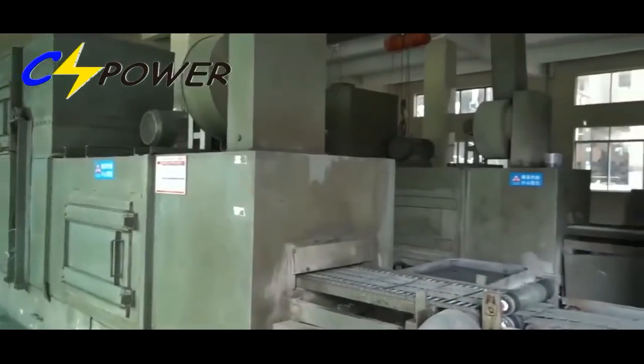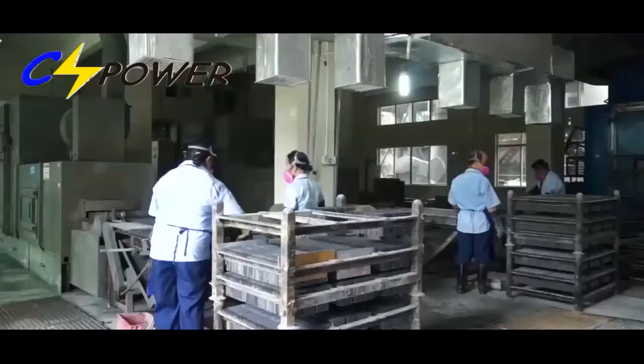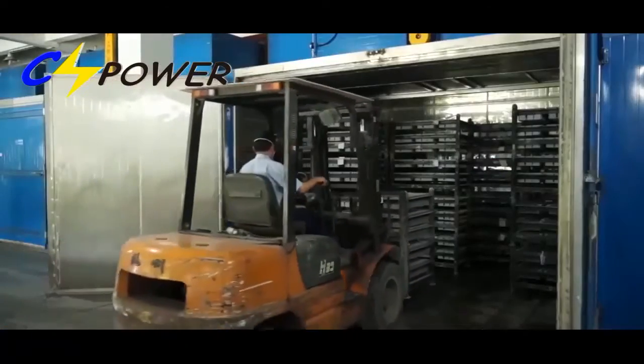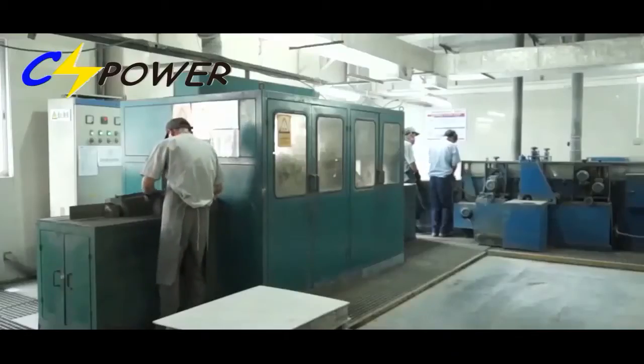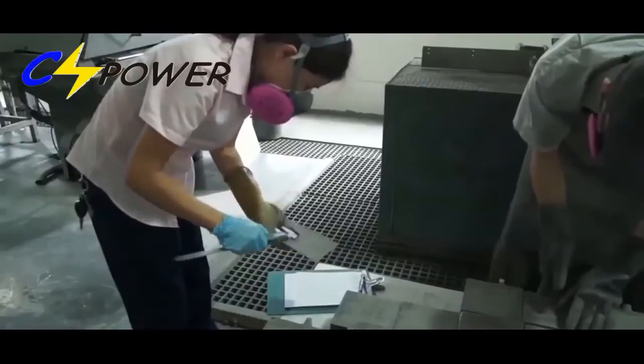The VRLA battery includes AGM battery, deep cycle battery, front terminal battery, with long lifespan over 10 years, mainly for UPS, telecom, and emergency standby equipment.